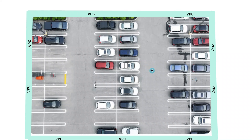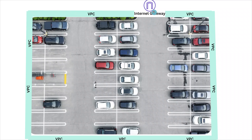So what if you want a few of your resources to communicate with the outside world? Then you use something called an internet gateway. The resources inside your VPC — or the vehicles inside your parking lot — will be able to go in and out using this internet gateway.